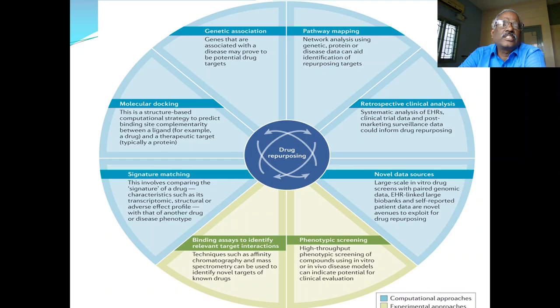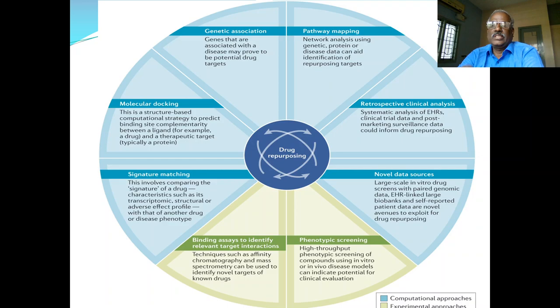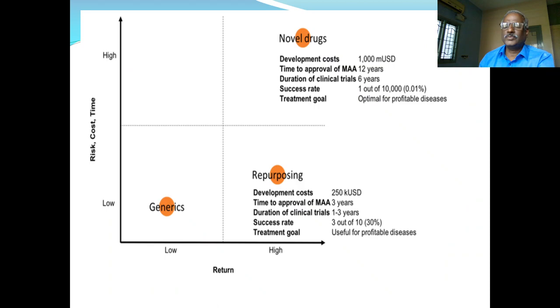Genetic association — whether it is due to a genetic defect or overexpression of a gene. For example, HER2 gene is overexpressed in breast cancer — that is genetic association. Pathway mapping I will explain elaborately. Retrospective clinical analysis — all these things I will explain in detail.